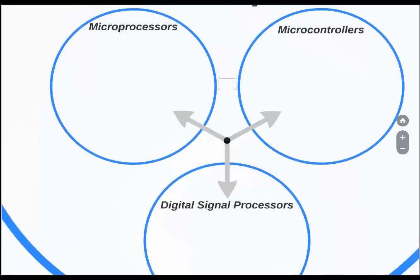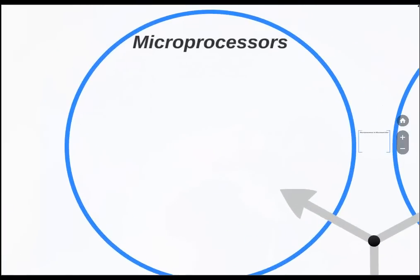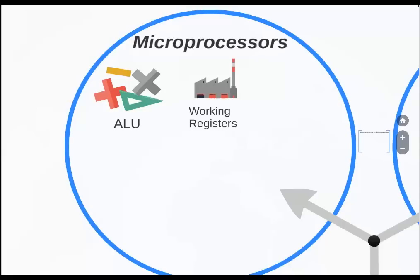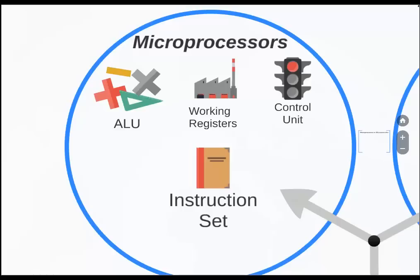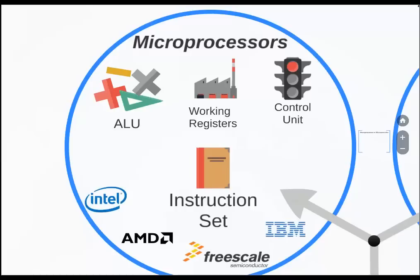If we focus our attention onto microprocessors, we find out that microprocessors are made up of arithmetic logic units, a set of special or general register arrays, a control unit, and a specific instruction set. The companies that deal or are big players in microprocessors are Intel, AMD, Freescale, and IBM.